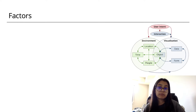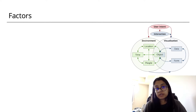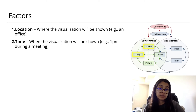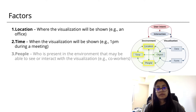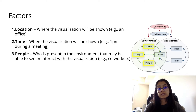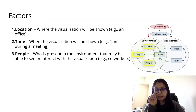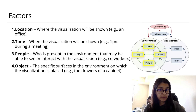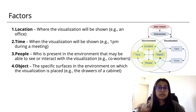Next, there are six factors that establish context for the visualization and define the visual characteristics of the actual projected content. The location describes where the visualization is going to be shown, like an office. Time is when it will be shown, like during a meeting. People describes who is present in the environment that may be able to see or interact with the visualization, such as coworkers. The object is the specific surfaces in the environment on which the visualization is placed, like the drawers of a cabinet, and this factor is the only factor that is part of both the environment and the visualization.